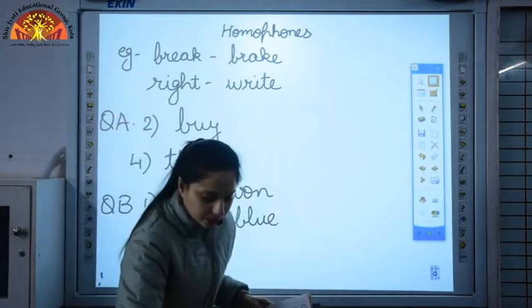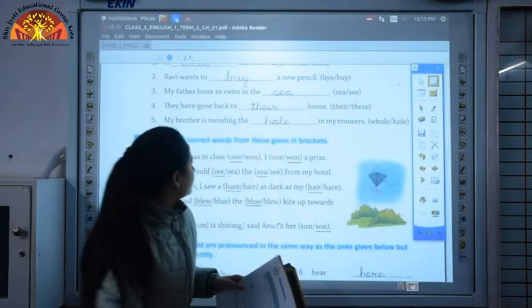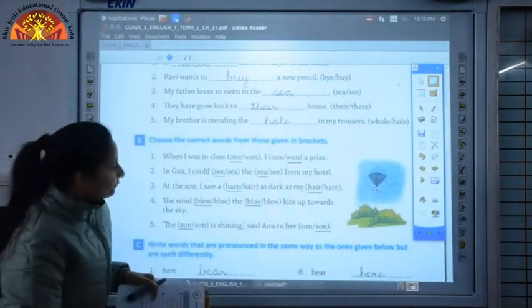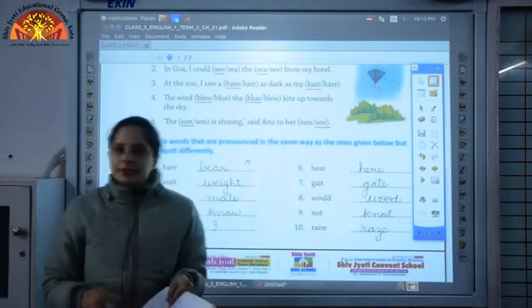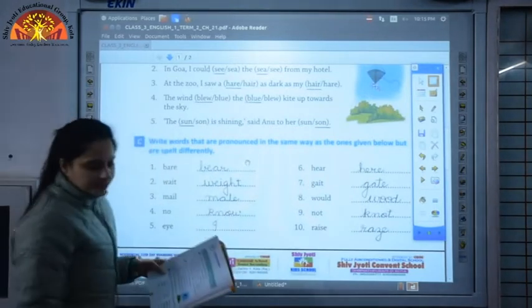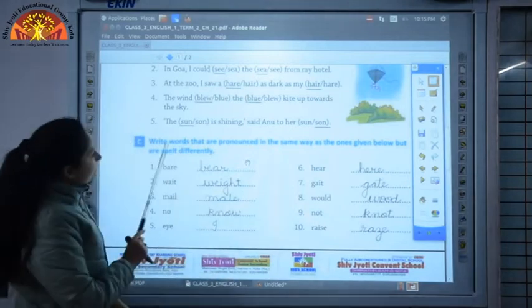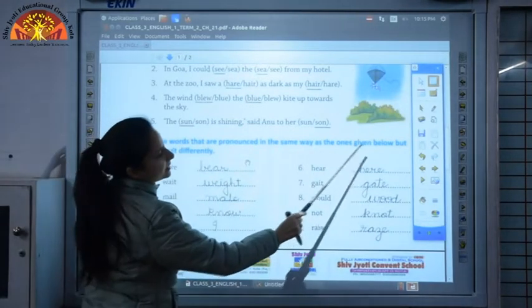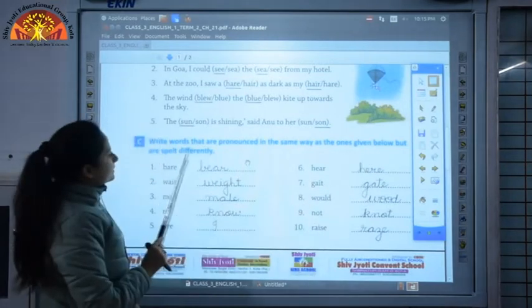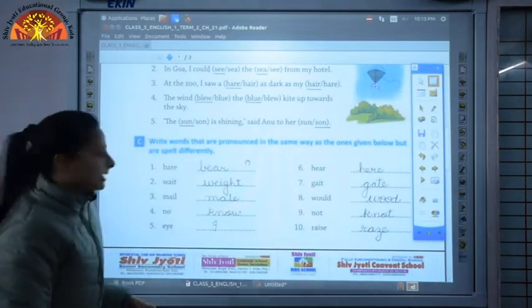Now I'll discuss question number C. Children, for rest of the parts you can refer the PDF when it will be sent to you. Do it yourself. Write words that are pronounced in the same way as the ones given below but are spelt differently.